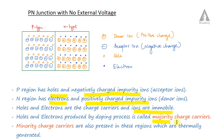Now, we will discuss majority charge carriers and minority charge carriers. Majority charge carriers are created by doping. In p-type material, holes are the majority charge carriers. In n-type material, electrons are the majority charge carriers.